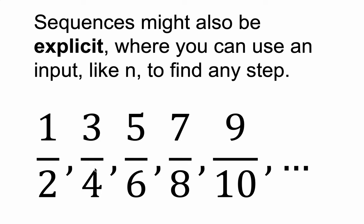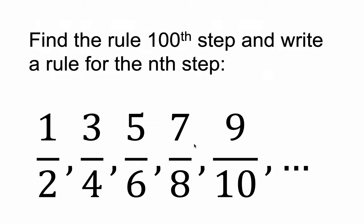Explicitly, it means: if I want to find some future step, what number can I plug into an equation to find that step? Why don't you pause the video and try to find the 100th step and write a rule for any particular step you might want to find.